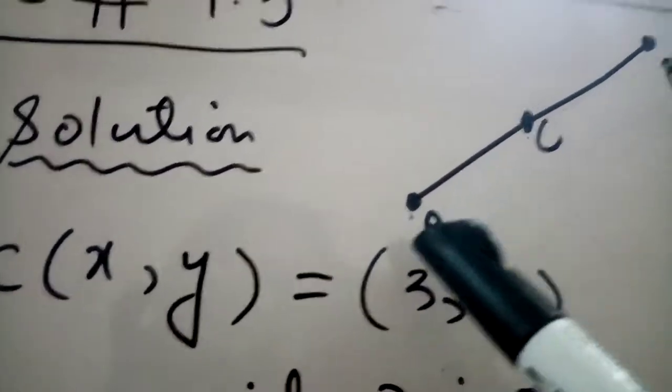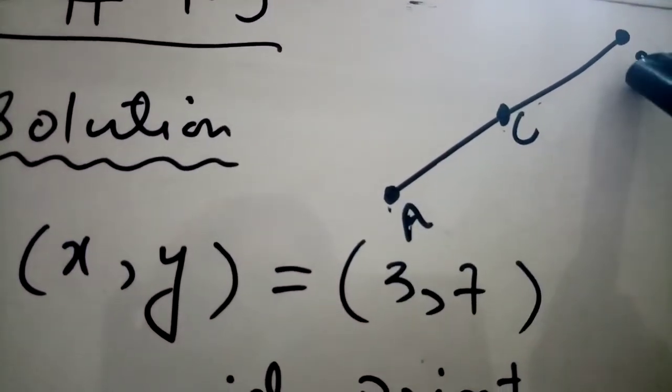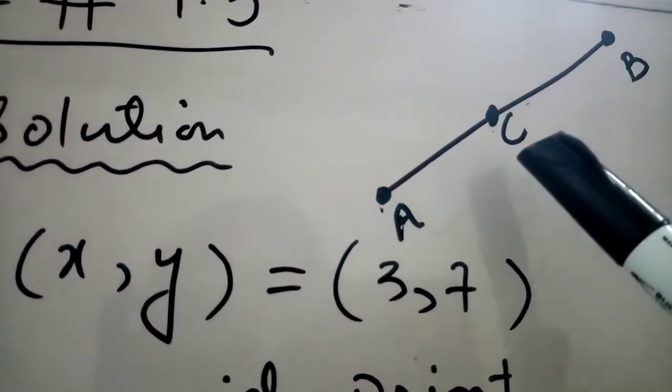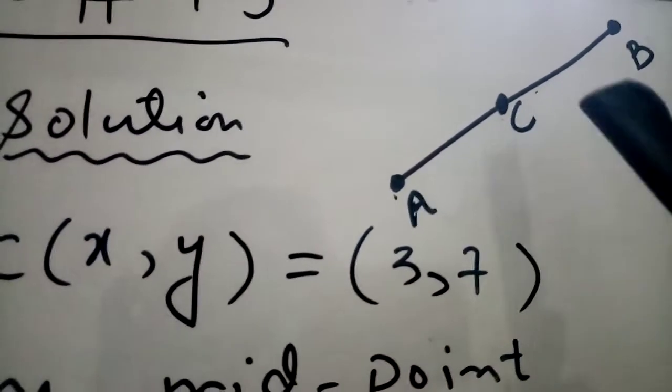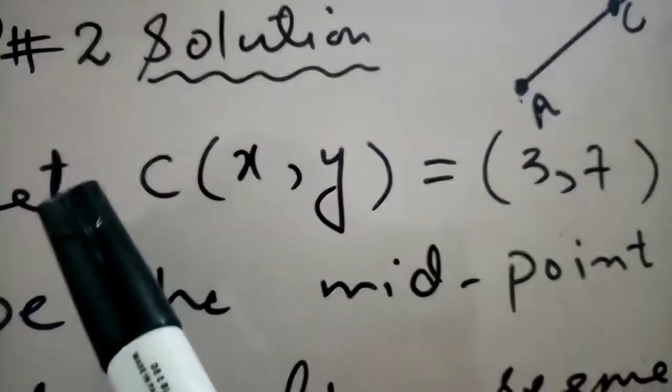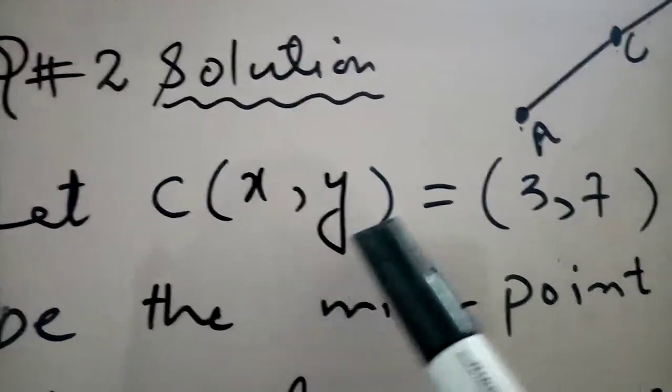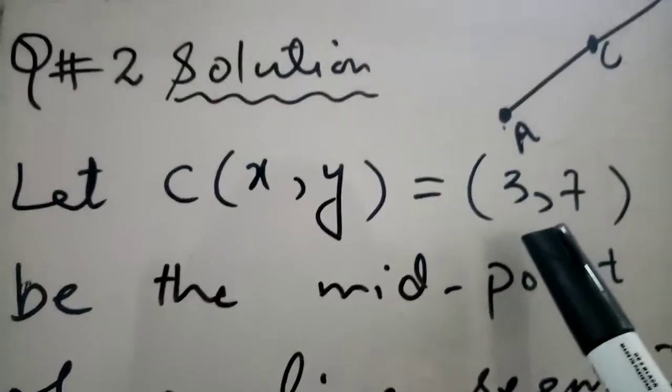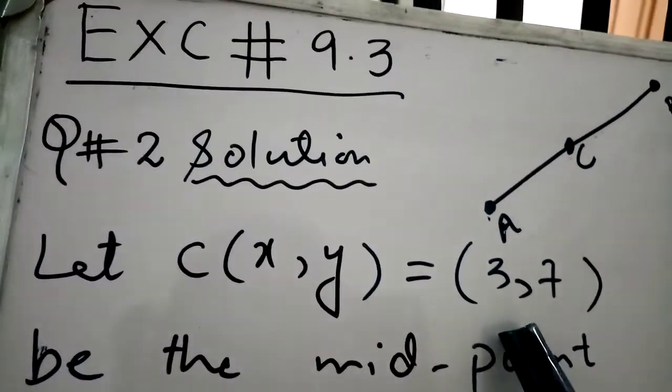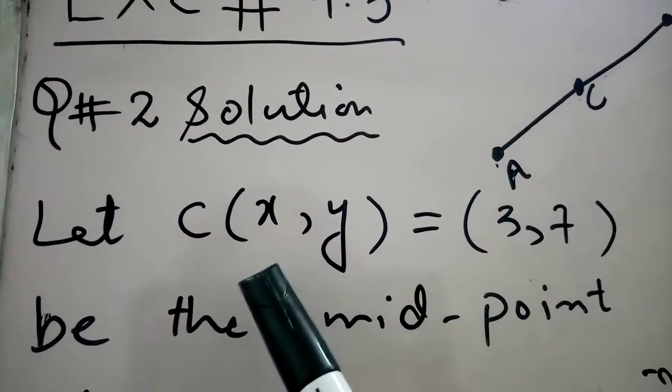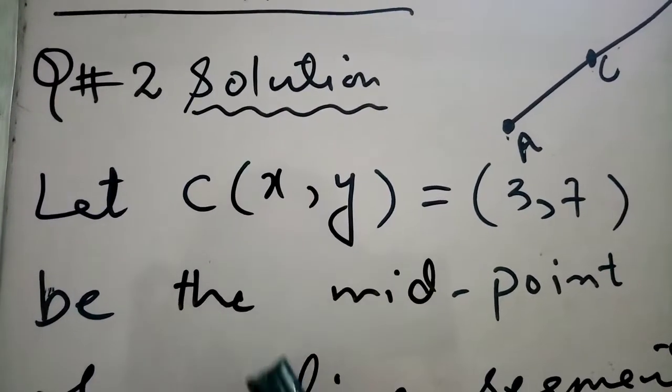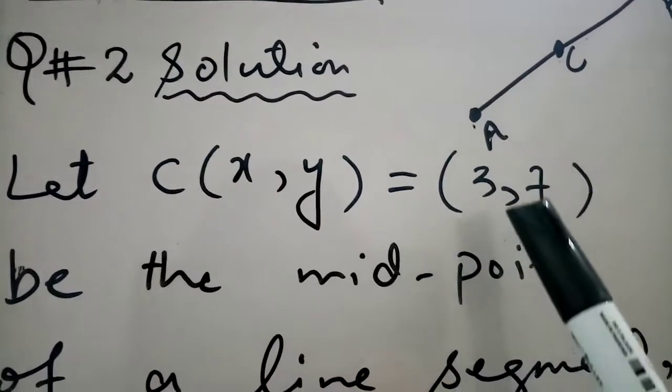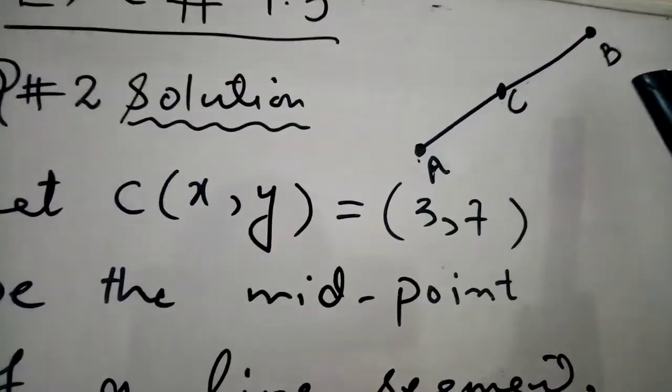On which we will take two endpoints A and B, where one endpoint is given and the midpoint is also given. So let C(x,y) equals (3,7) be the midpoint. This midpoint is already given in the question. We represented it by C(x,y) so that we can use it in the midpoint formula to find the other endpoint B of our line segment.